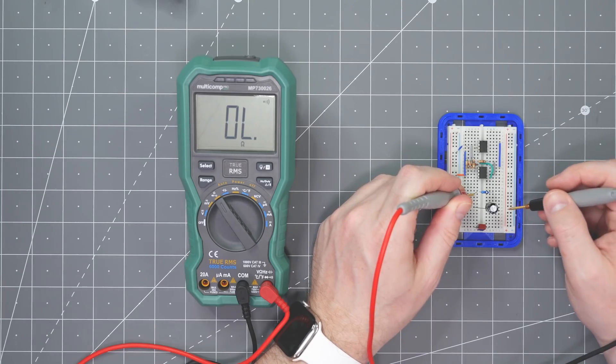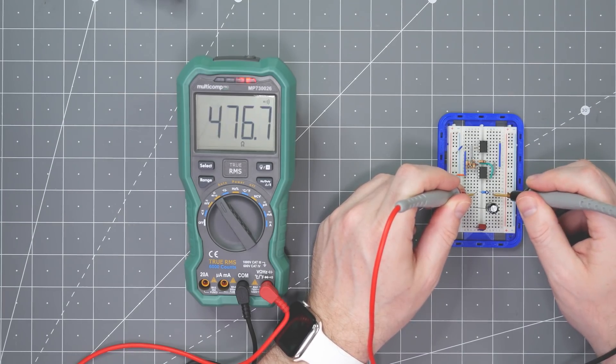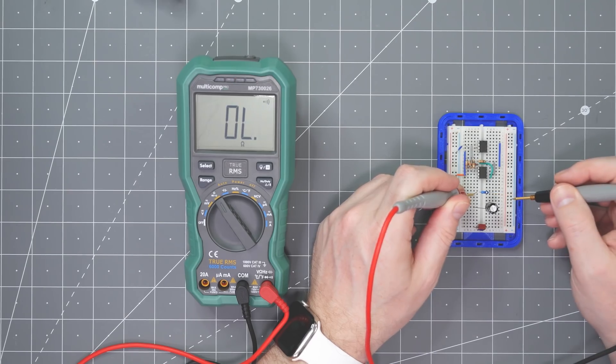You always need to remember that the resistance or continuity mode supplies a small voltage and a current. When you are measuring a resistor, this current creates a voltage, which lets us measure the resistance.